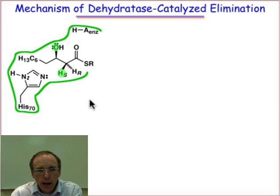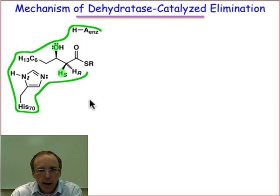We'll also look at how a suicide inhibitor — that's an irreversible inhibitor — uses this same mechanism to fool the enzyme and eventually block it from further catalytic activity.